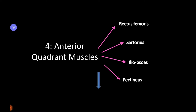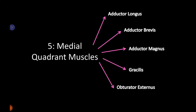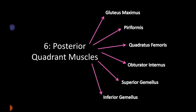All four anterior quadrant muscles are responsible for flexion of the thigh and are supplied by a single nerve. There are five medial quadrant muscles: adductor longus, brevis, magnus, gracilis, and obturator externus. All these muscles are responsible for adduction of the thigh and are supplied by the obturator nerve.